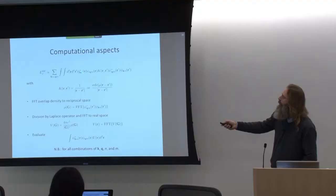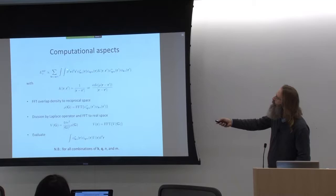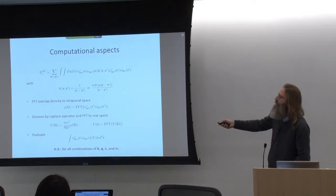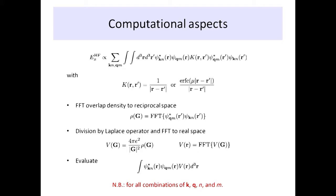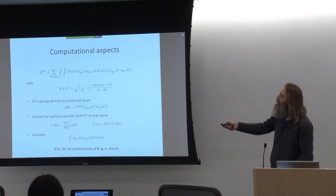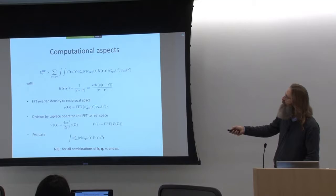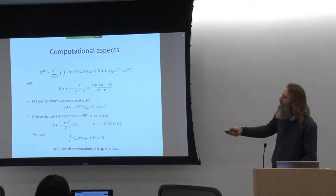Coming to the computational aspect. This is what we would like to evaluate. We have two sums over the orbitals to compute our Fock exchange energy, with a 1/(R − R') kernel, or the range-separated short-range kernel. The first thing you would do is recognize that we have two orbitals at different K points and two different bands, so this sum runs two times over all K points and two times over all occupied bands. For each of these overlap densities, we do an FFT to get the overlap density into reciprocal space, then evaluate the potential from that overlap density.